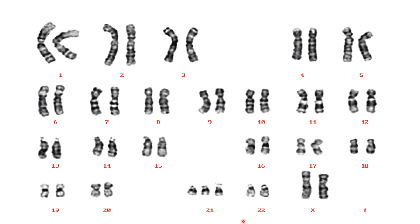Now, by looking at this karyotype, how do we identify the defect? As we all know, each chromosome is present in pairs. But here, you can see that the 21st chromosome is 3 in number — there is one extra chromosome. So, this particular karyotype belongs to a person having Down syndrome. Other than chromosome number, deletions, translocations, etc. can also be identified by using a karyotype.